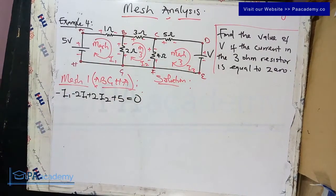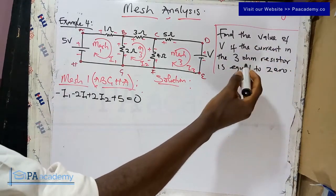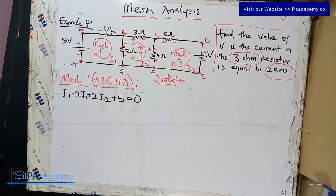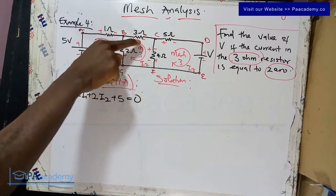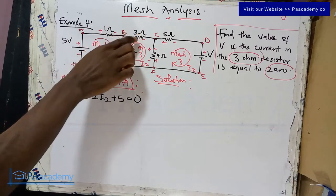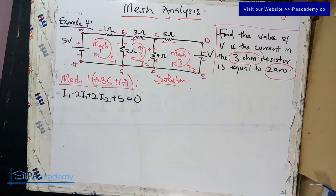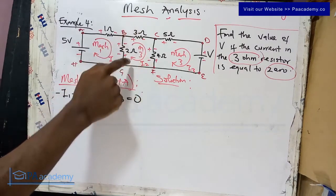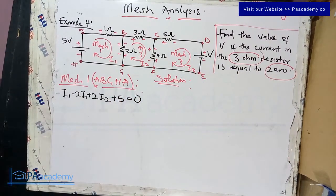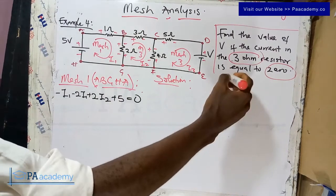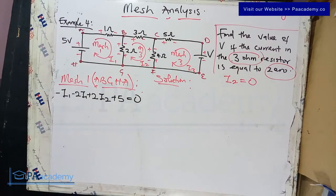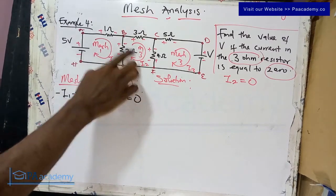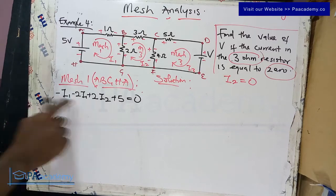Before we simplify, note the key information: the current in the three-ohm resistor equals zero. The three-ohm resistor is in mesh two only, so the only current passing through it is i2. Since we are told that current is zero, this simply means i2 equals zero. Anywhere we encounter i2, we substitute zero.